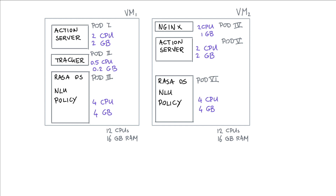These pods can be seen as compute, but they also have an address of sorts. Every pod has an IP address attached that's meant for internal use. The idea is that these IP addresses can be used to connect services together and to directly communicate between different pods.